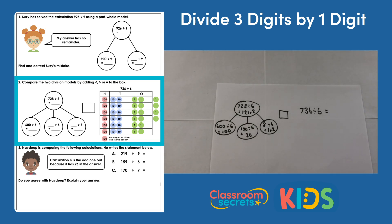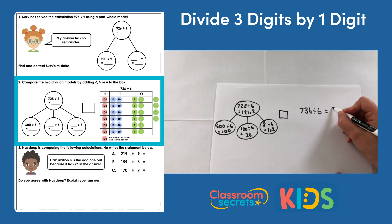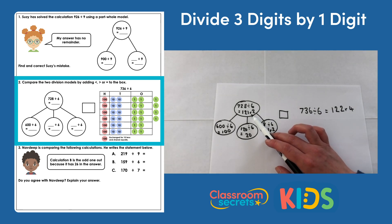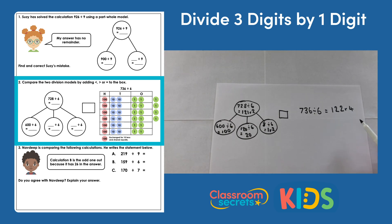For 736 divided by 6, on the place value grid the hundreds have been shared equally between 6, then 100 has been exchanged into the tens. Reading across the top line we have 1 hundred, 2 tens, 2 ones and a remainder of 4, giving us 122 remainder 4. So our two answers are 121 remainder 2 and 122 remainder 4, meaning 728 divided by 6 is less than 736 divided by 6.